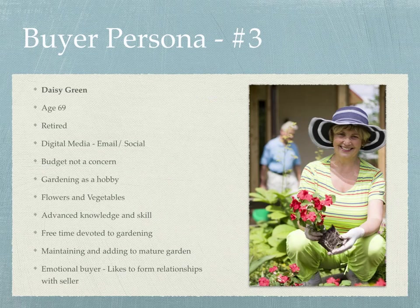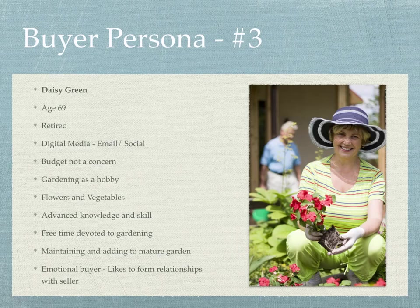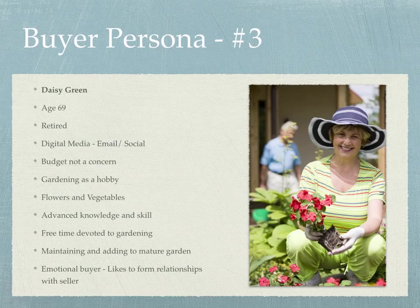The next persona is a young woman, age 35, who doesn't have a lot of time. She likes to make decisions quickly. She's online a lot, goes on social media and email, understands the digital world, and just wants her lawn to look nice. She is a beginner or novice.